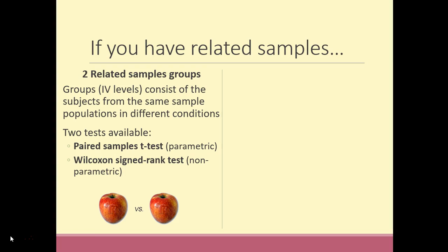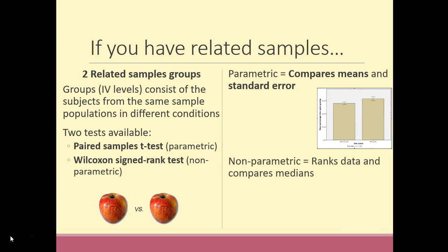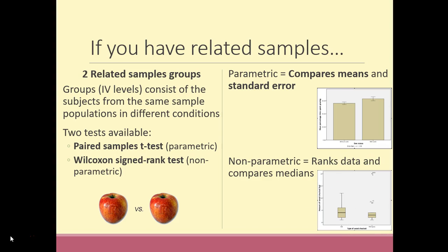It's important to make the correct decision here. Parametric statistics compare means — in a test for differences it compares means and how close that mean is to the population estimate, known as standard error, presented using a bar graph with standard error bars. Non-parametric tests rank the data and compare medians, presented using a box plot with whiskers.